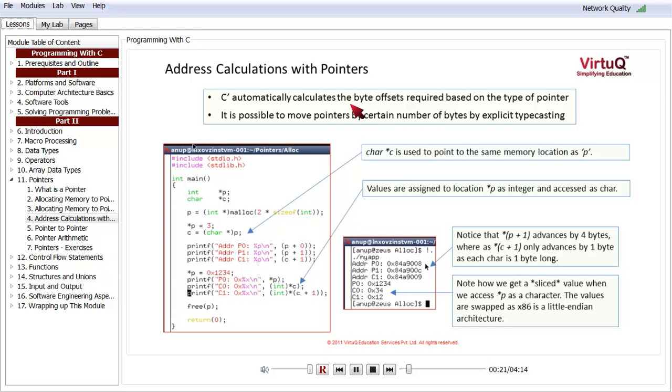However, at times we may want to move in the memory location by different offsets, say for whatsoever reason, and this is not uncommon in embedded systems. It is definitely possible inside C and how we can do it is we can use explicit type casting.